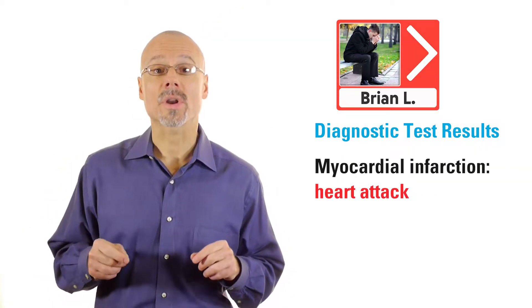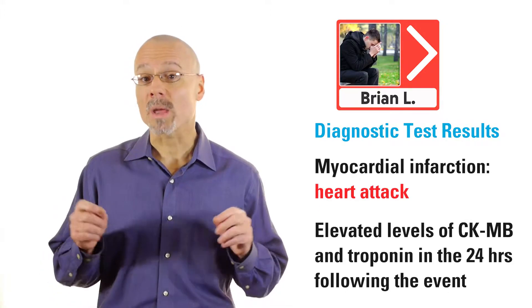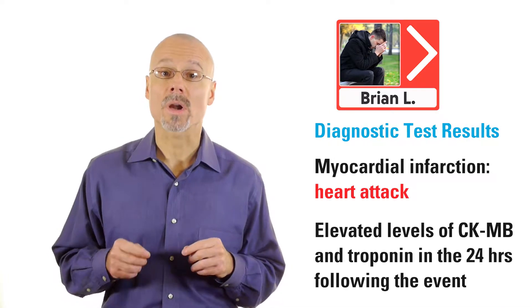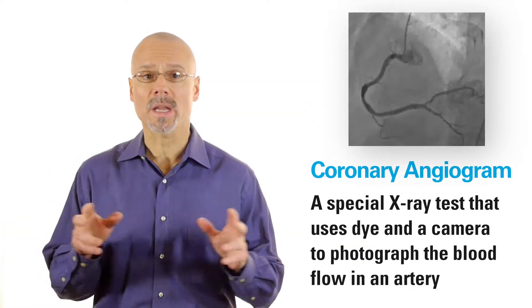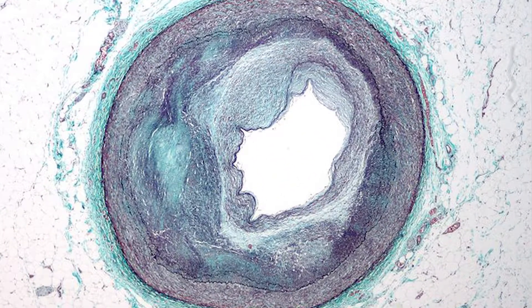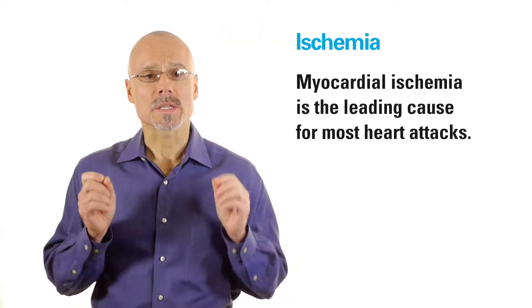In fact, Brian's symptoms and test results indicate a myocardial infarction — a heart attack. Diagnostic tests for cardiac enzymes suggested the same thing, because levels of CKMB and troponin were elevated in the 24 hours following the event. Next, the healthcare team had to determine where in Brian's heart the heart attack happened. To do so, they conducted a coronary angiogram, a special x-ray test that uses dye and a camera to photograph the blood flow in an artery. The procedure revealed blockages in two arteries, which had significantly reduced the flow of blood to Brian's heart. This condition — decreased blood supply resulting from obstructed arteries — is known as ischemia. It's the cause for most heart attacks.